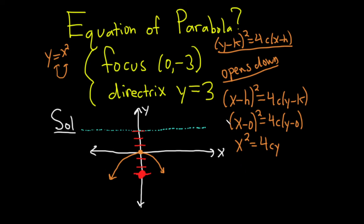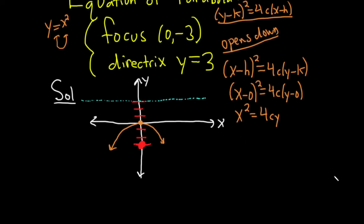So all we have to do is find C. The absolute value of C is this distance here. So you can see that that's going to be three. But because it opens down, C is negative.